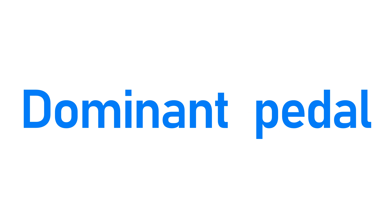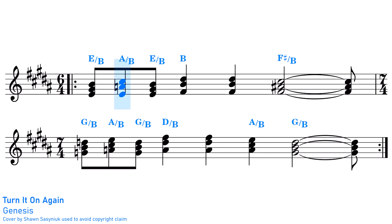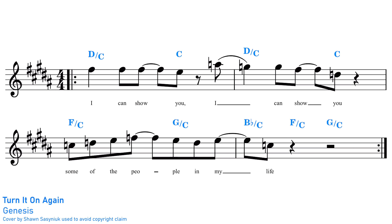We could pedal any note we like in the key. A great example of the power of pedal point is 'Turn It On Again' by Genesis. The song is ultimately in the key of B, and throughout the entire intro and opening verse we get a pedal point of B underneath every single chord change — and there are a lot of chord changes. Then in the bridge, we instead get a pedal point on the flat 2 degree of the scale — C natural — under every single chord.